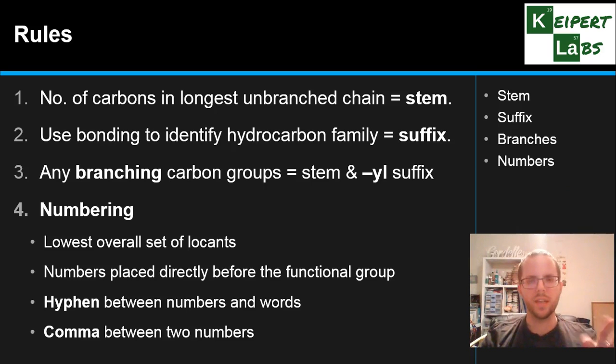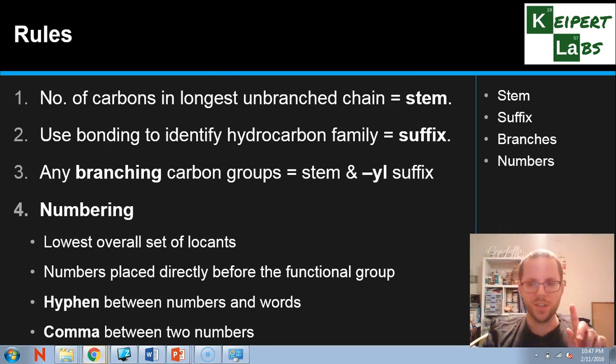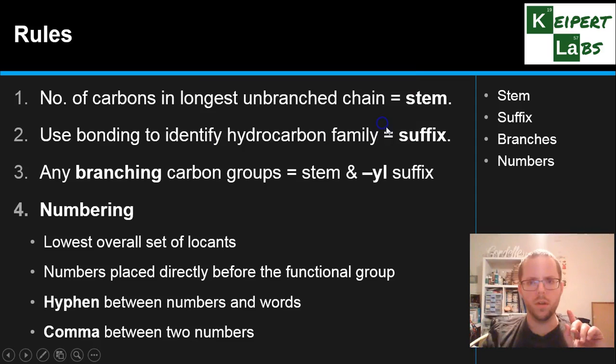And then we look at the numbering. So we want to get the lowest overall set of numbers or locants. That's the goal that we're going to pick. We need to then put the numbers directly before the functional group they refer to. When you've only got one group, it's not quite so critical. But you can see that as soon as you get two, three, four different functional groups, you need to make sure that you keep the number close so that it's clear to see what's what. We also, by convention, thinking about like if we're learning a new language, this is some of the grammar, that we use hyphens between when we write down numbers and words. So a hyphen between numbers and words. And if we happen to have more than one number in the set, like in that previous example, we use a comma between them. So we would have two comma two hyphen dimethylbutane.